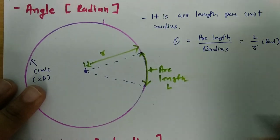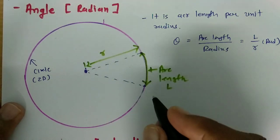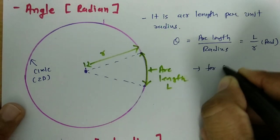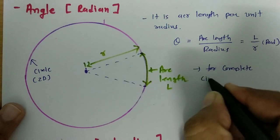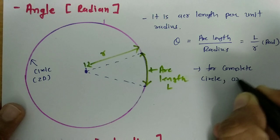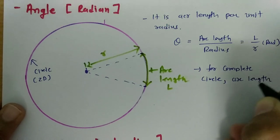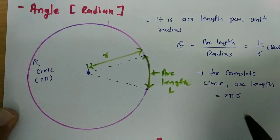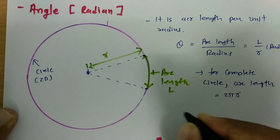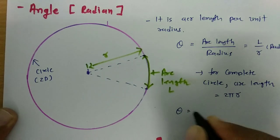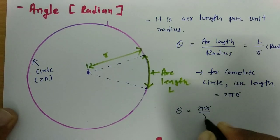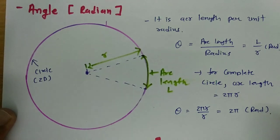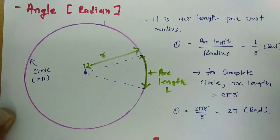For example, if I consider a complete circle, what will be the angle in 2D? For a complete circle, arc length will be 2πR. So if you want to calculate the angle in terms of radian, that will be arc length 2πR divided by radius R, which gives 2π radian. This is how we calculate angle in two dimensions in terms of radian.